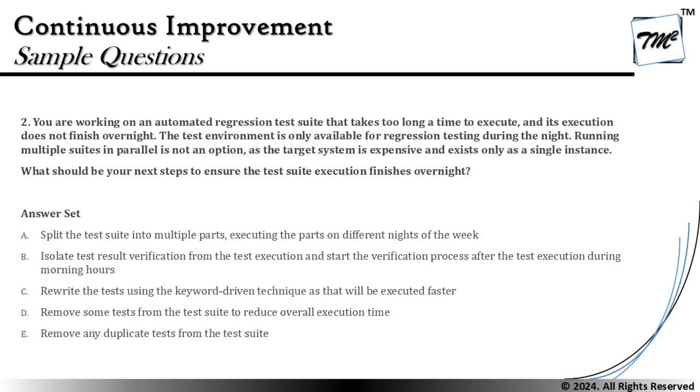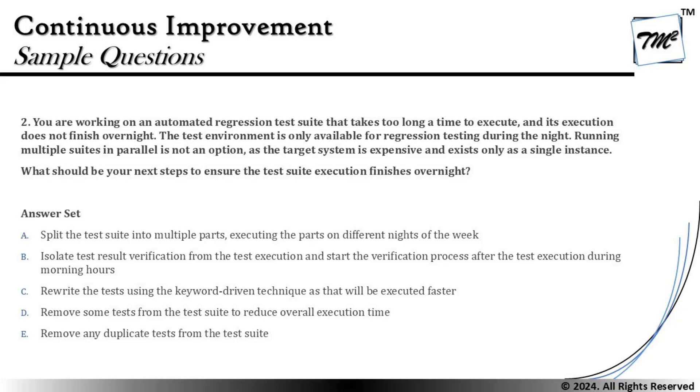Option C says: rewrite the tests using the keyword-driven technique as that will execute faster. It is not stated anywhere that the keyword-driven technique executes faster — it is more about how tests are organized. Instead of scattering things, you call the functions you want to run at a given point in time, which is a systematic way of driving your tests. But it does not mean that execution time would reduce by using a framework like that. It totally depends on the number of tests to be executed, and if that remains the same, the approach of writing the script does not make a difference.